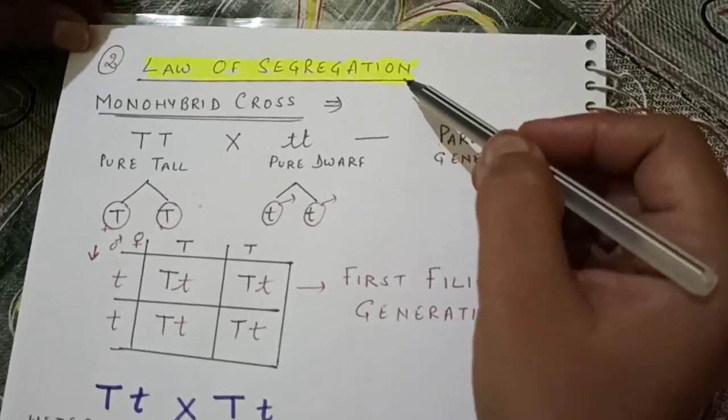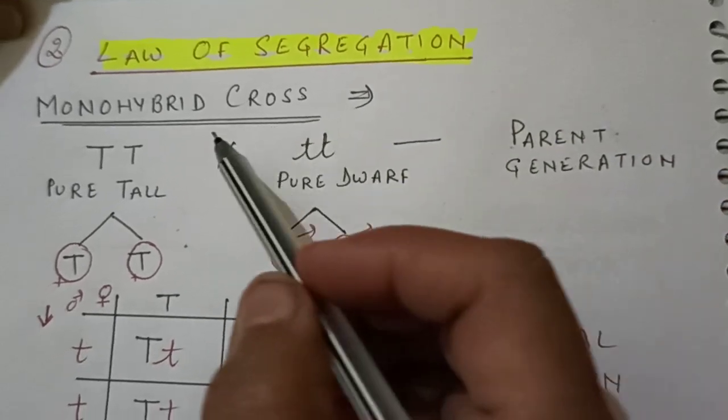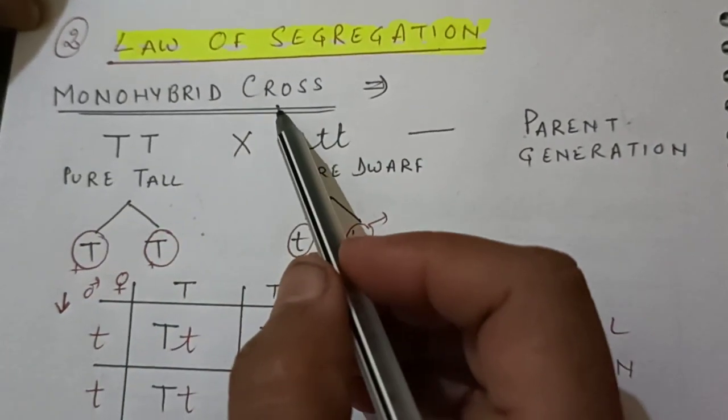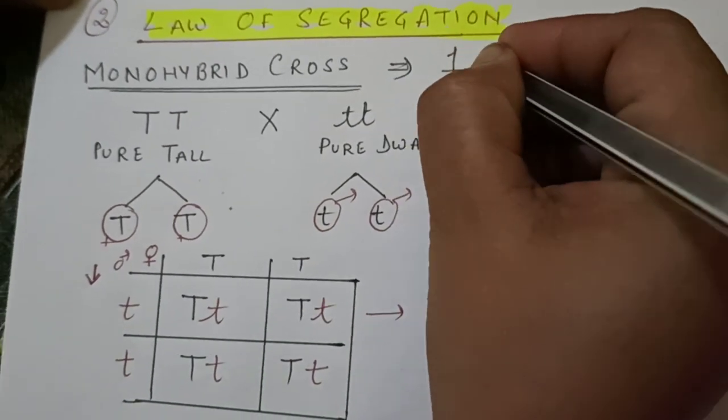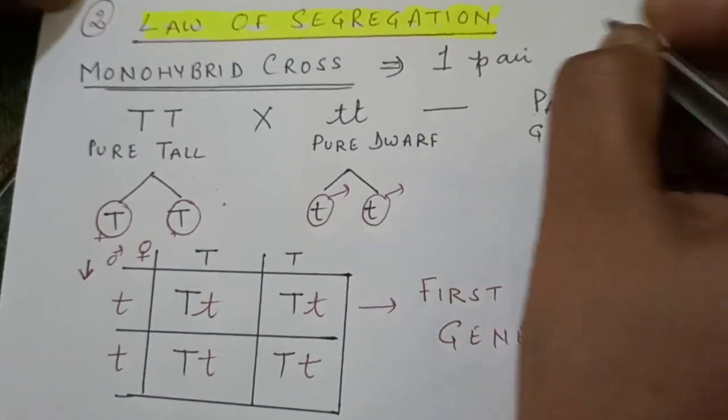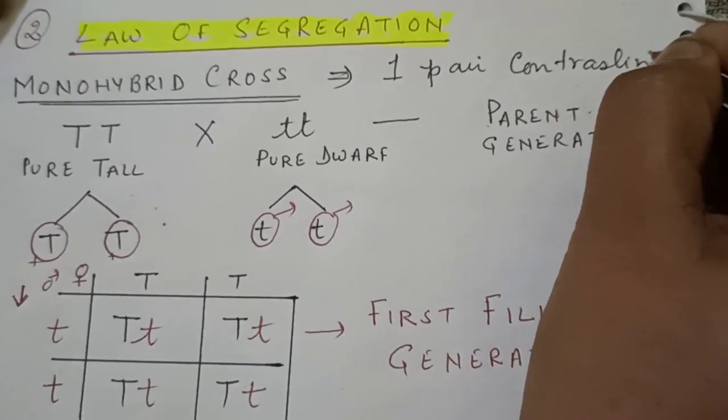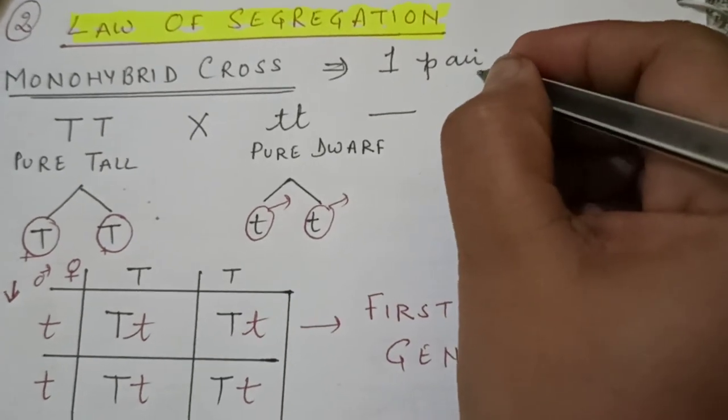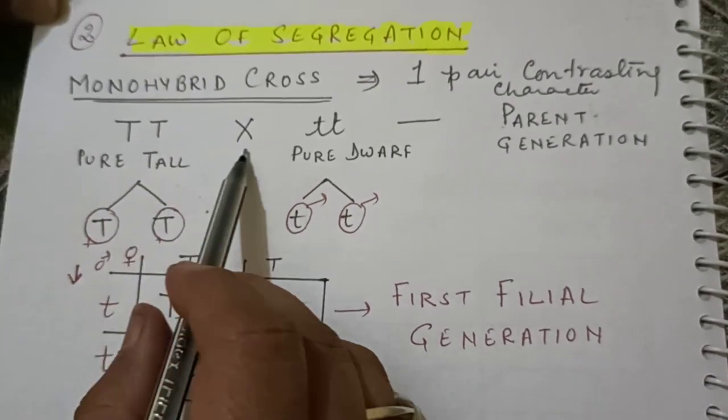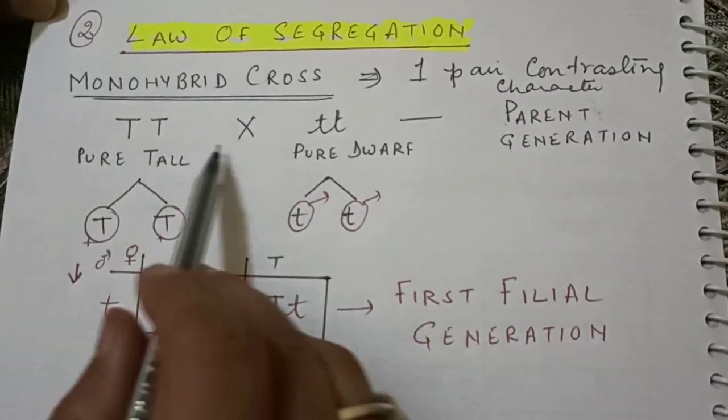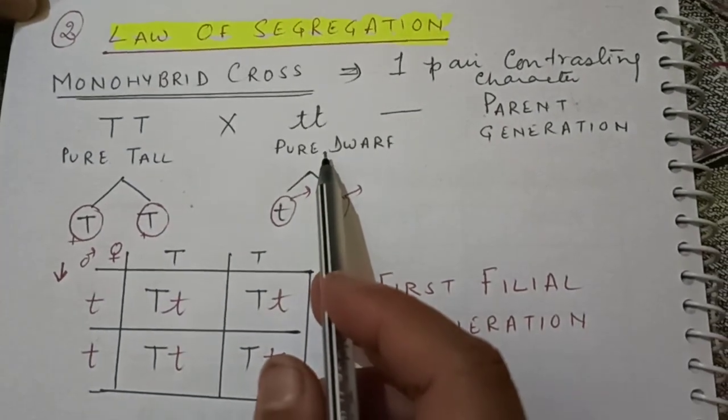As we know, the law of dominance was there in monohybrid cross, means a cross between one pair contrasting character. Here I have taken two alternative traits of height: tall and dwarf, or in some books it is written as short.